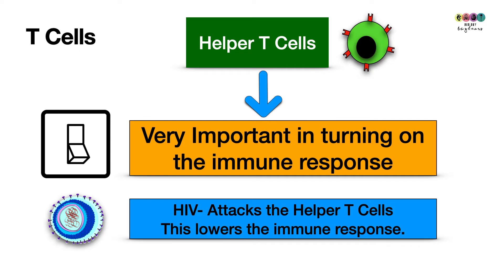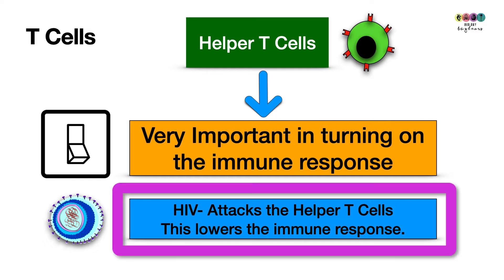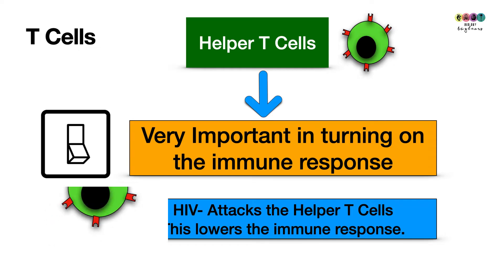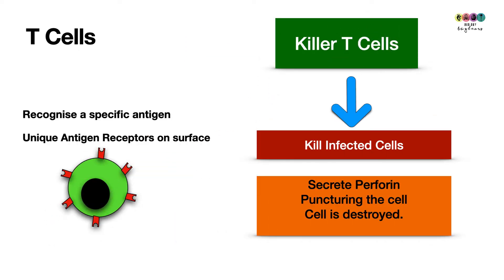Helper T cells, and the chemicals they produce, are needed to fully activate the B cells that produce antibodies and to fully activate the killer T cells. If helper T cells are not working, the immune response cannot be turned on fully and cannot be amplified. One virus which attacks helper T cells is HIV, and because it attacks these cells it lowers the immune response in those infected.